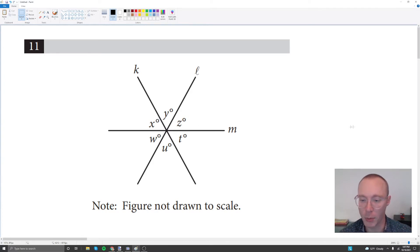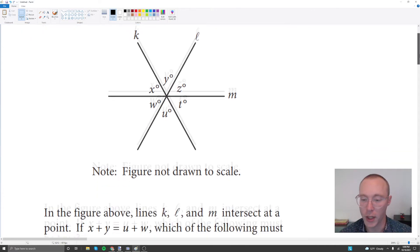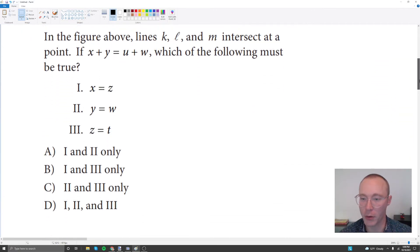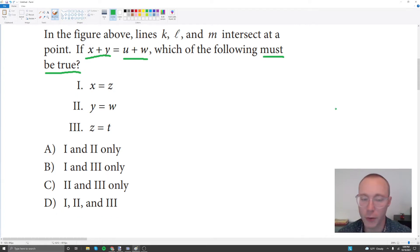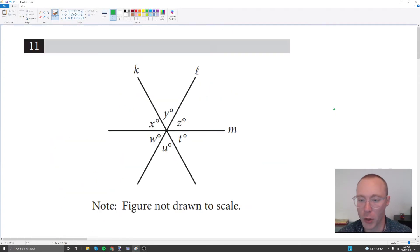With this problem we have three intersecting lines with six angles and we're given some information about rules or initial conditions we have to abide by while we try to figure out our answer. The key information is that angle x plus angle y must equal angle u plus angle w. The phrase must be true implies there are other ways these three lines could intersect and still satisfy the initial conditions.